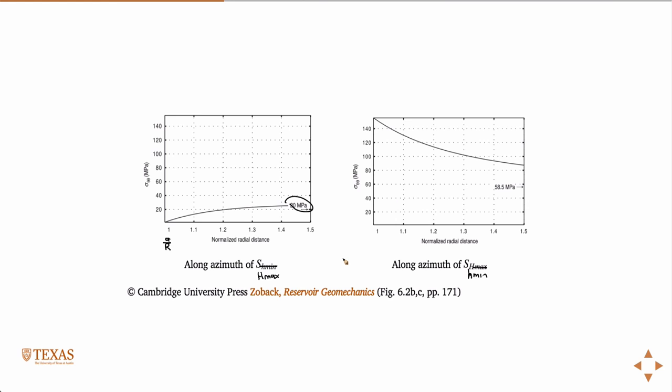But more importantly is over here. What you can see is that at the wellbore wall, we have a stress intensity that's almost three times higher than the far field stress. This is the point of this plot. Along SH max, there's a stress intensity associated due to the fact that there's a hole there, a circle there. The hole causes the stress intensity.